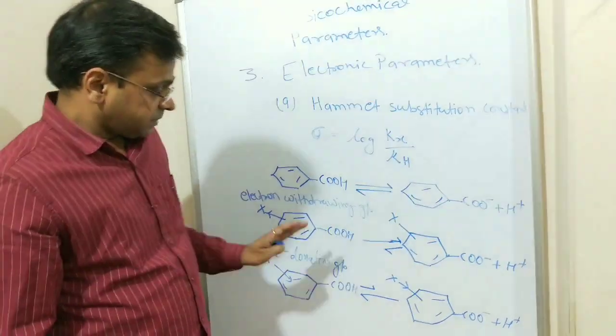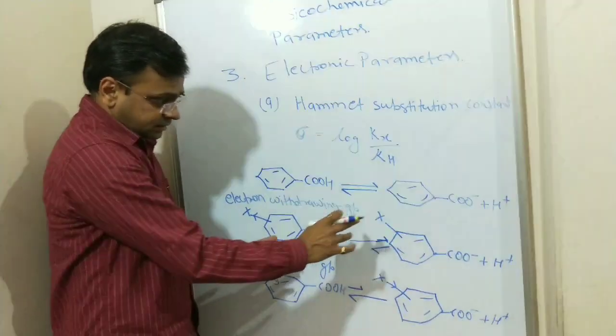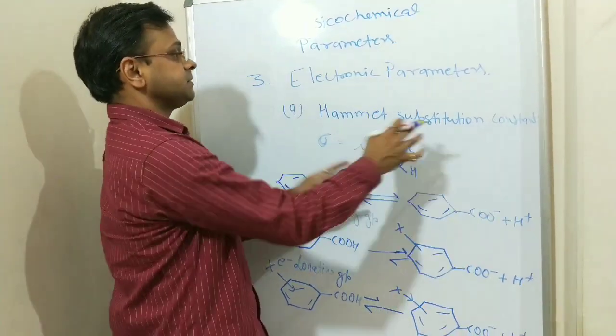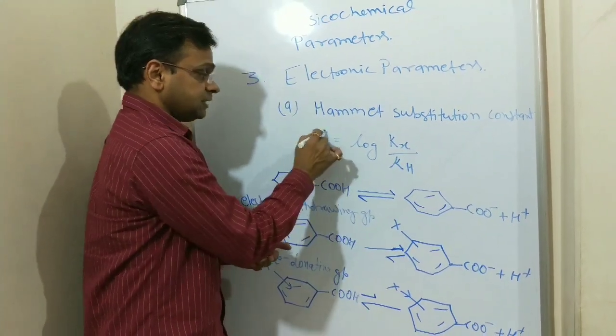So by using benzoic acid and its salt, we can calculate, we can estimate the Hammett substitution constant, small sigma.